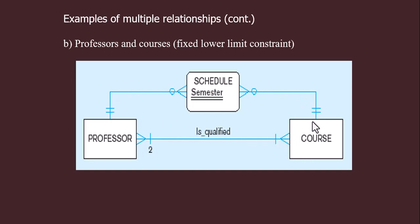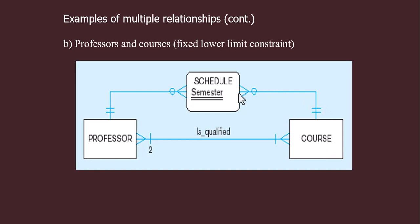This is a scheduled relationship between these two entities, and it is actually a ternary relationship. The ternary relationship uses mandatory and many constraints at the ends. The constraint can be optional or one — many courses can be scheduled to a professor, and it is possible that no course is scheduled; or one course can be scheduled to many professors, or it is also possible that the course is not scheduled at all.